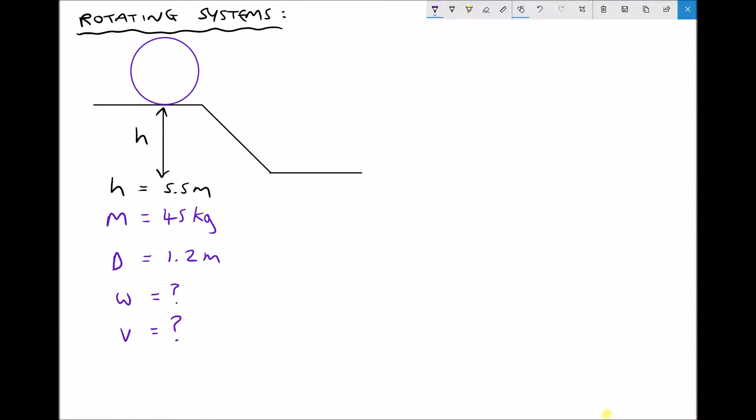In this example we have a solid drum or barrel which has been elevated through a distance h of 5.5 meters. We're going to allow that barrel to roll down the slope and what we want to determine is both its angular velocity and its linear velocity once it reaches the bottom of the slope.